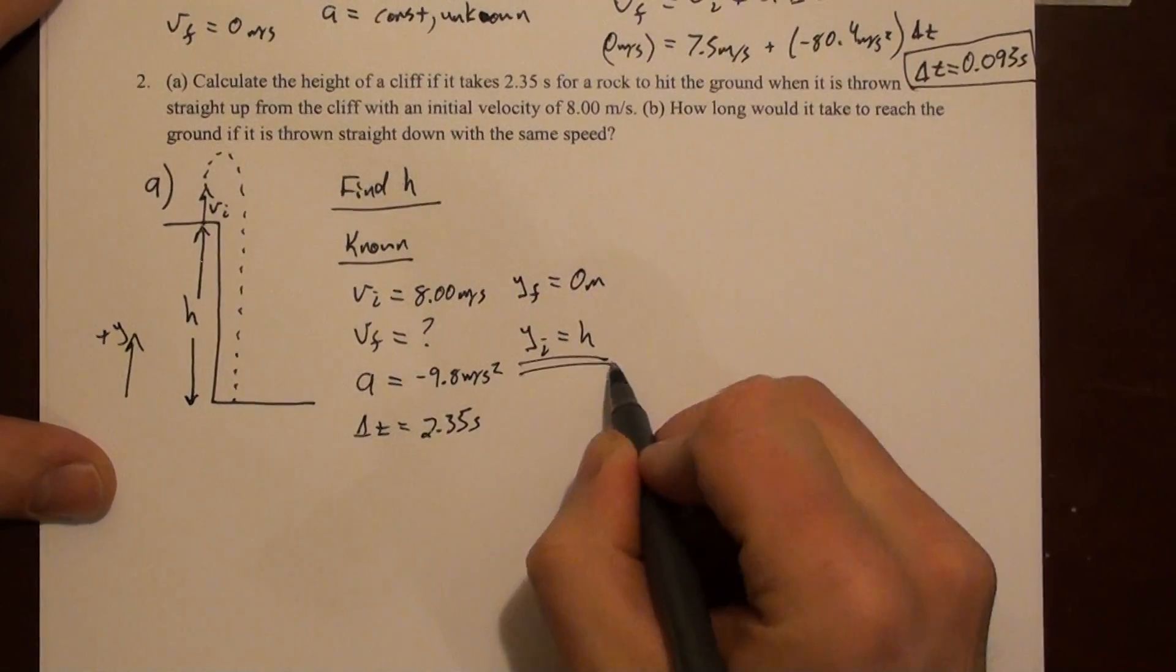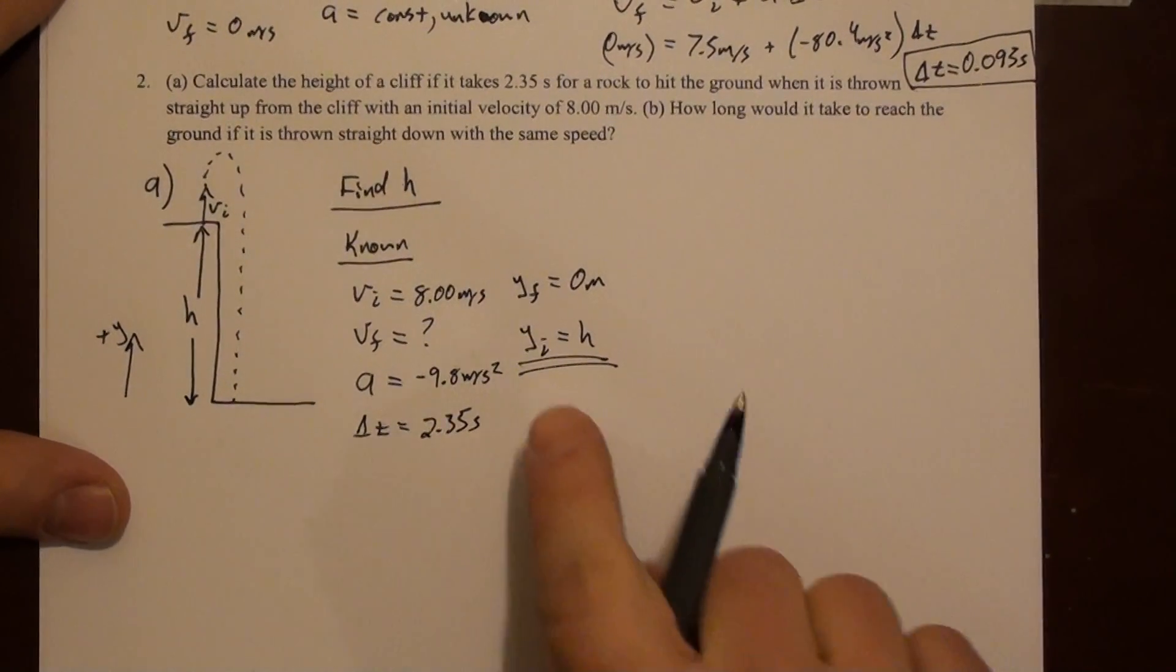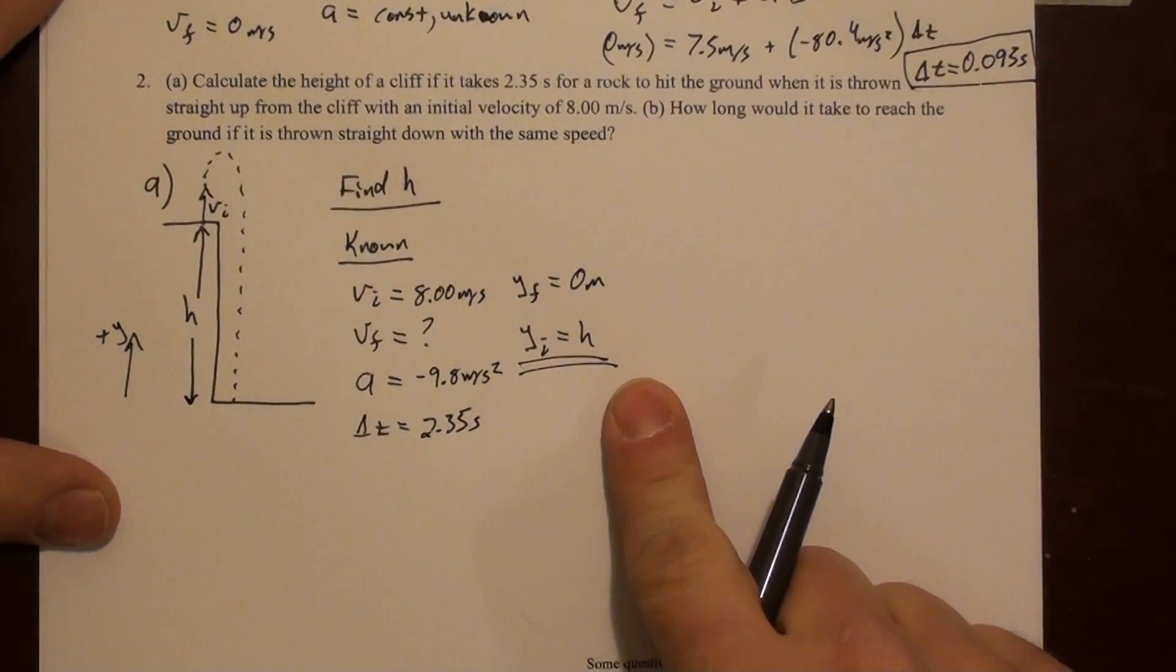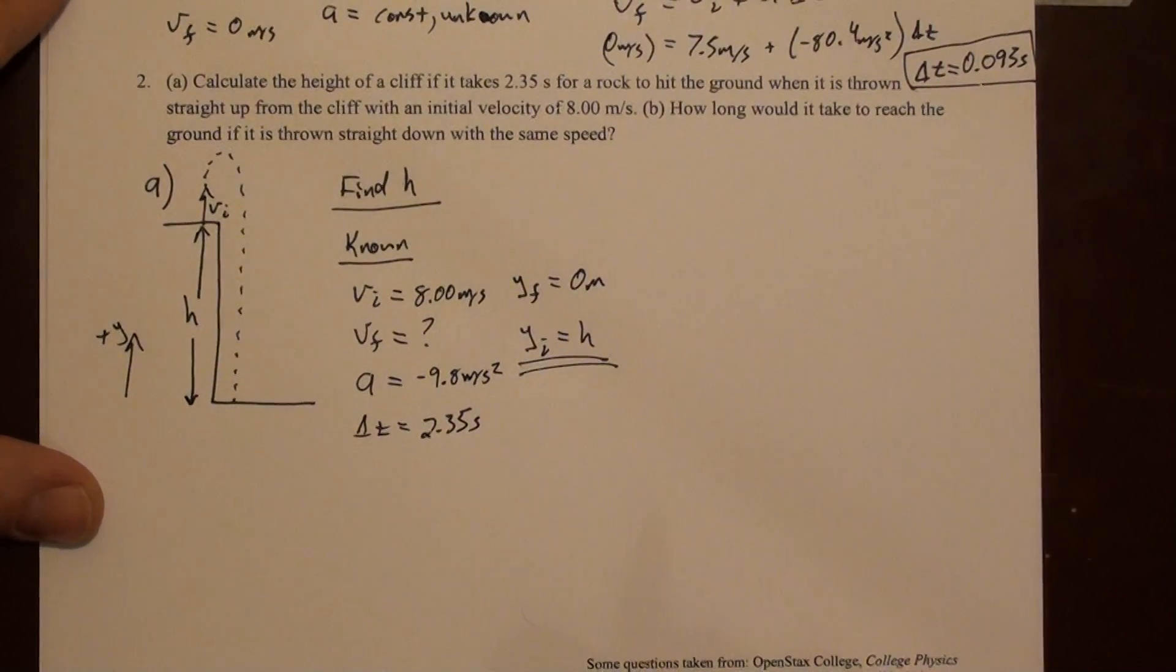This is what we're solving for. So any equation that has y initial in it, that's the h that we're looking for. So it looks like we could use y final equals y initial plus v initial delta t plus one half a delta t squared.